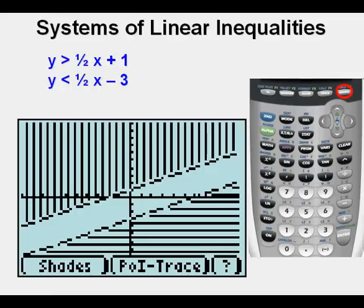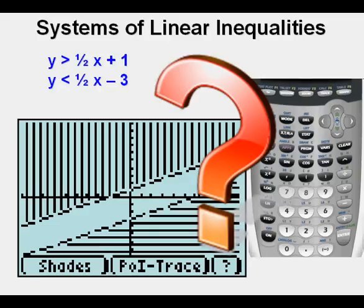What is the solution set for this system of inequalities? The two shaded areas never overlap, but are bounded by two dashed parallel lines. There are therefore no solutions to this system of inequalities — there is not a single point on the coordinate plane that satisfies both inequalities.